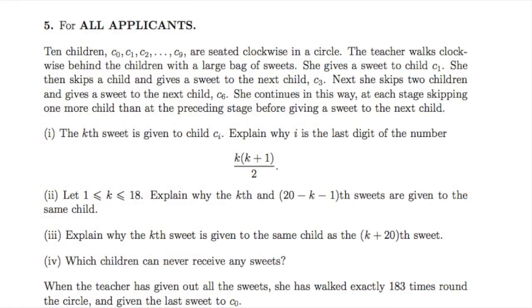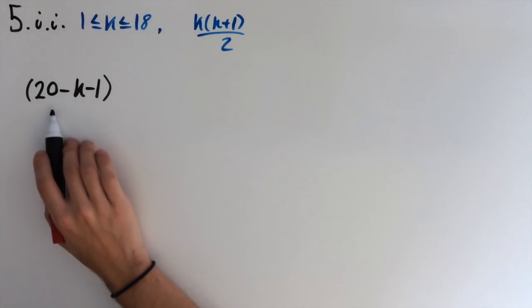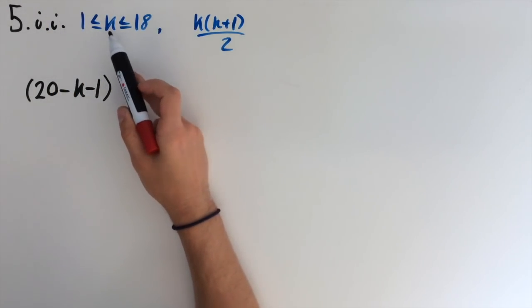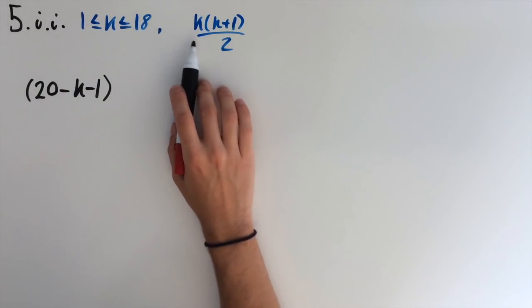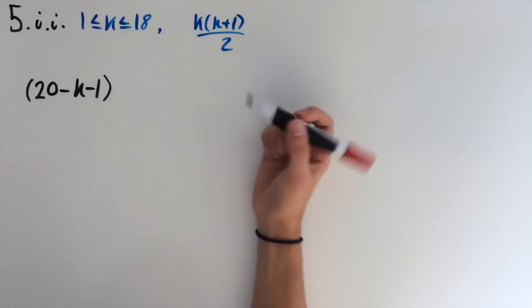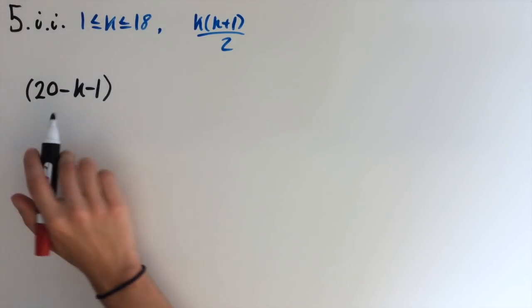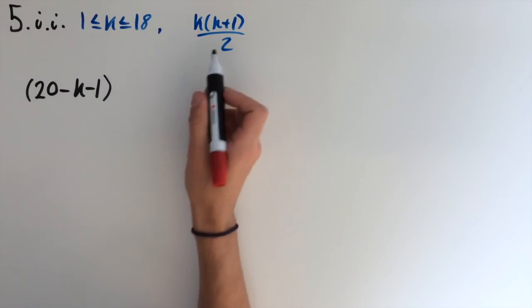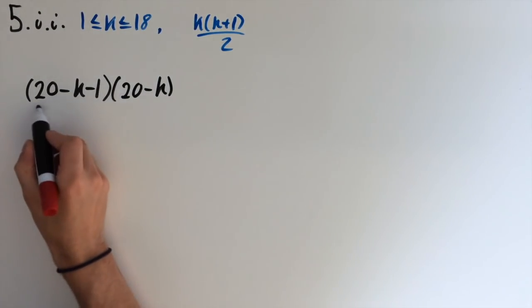For part ii we're told that k is between 1 and 18 inclusive. We need to explain why the kth and 20 minus k minus 1th sweets are given to the same child. So what I'm going to do is I'm going to plug this number into the formula we had earlier. And hopefully we can find out which child this sweet was given to. So if I let k essentially be this number, then k plus 1 is going to be 20 minus k, and we're going to divide by 2.